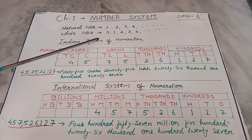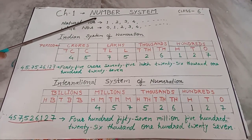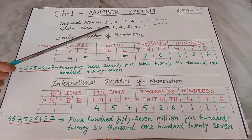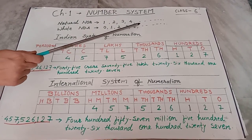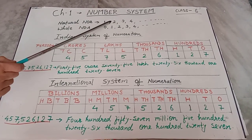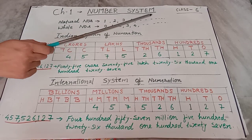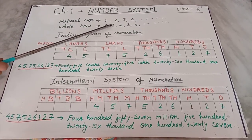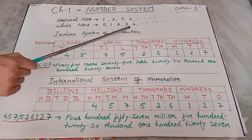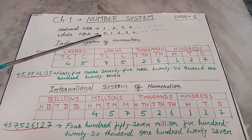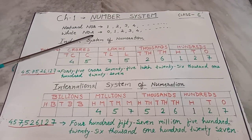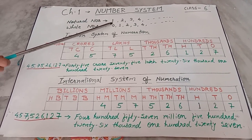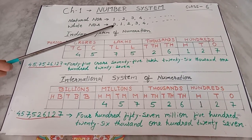Before that, you have already studied in the previous class the natural numbers. All the counting numbers — 1, 2, 3, 4, 5, 6 and so on — are called natural numbers. All the natural numbers together with 0 are called whole numbers. The smallest natural number is 1 and the smallest whole number is 0.